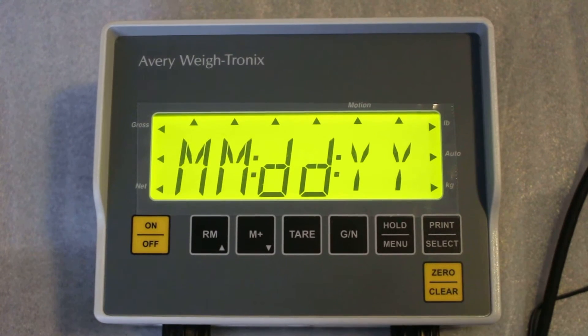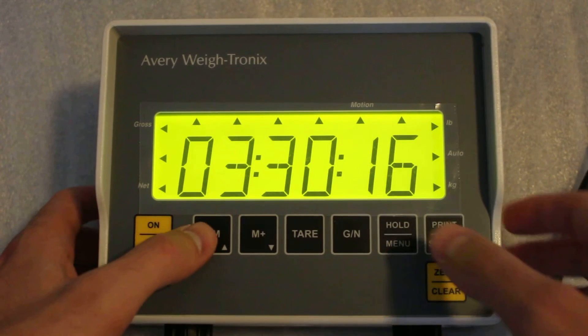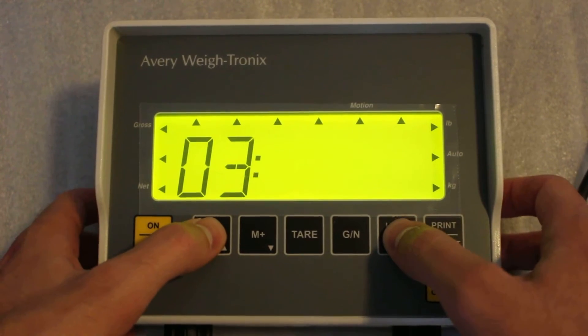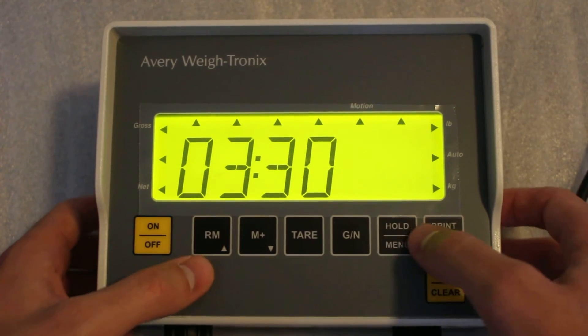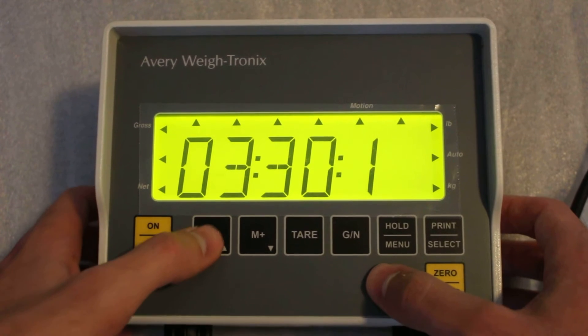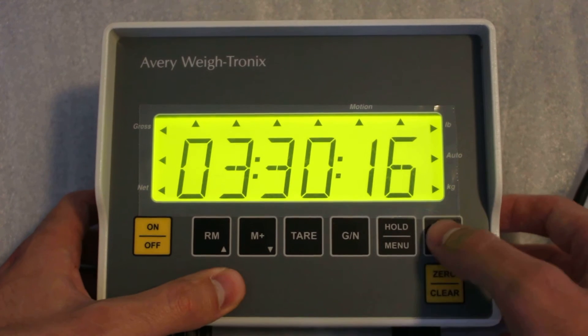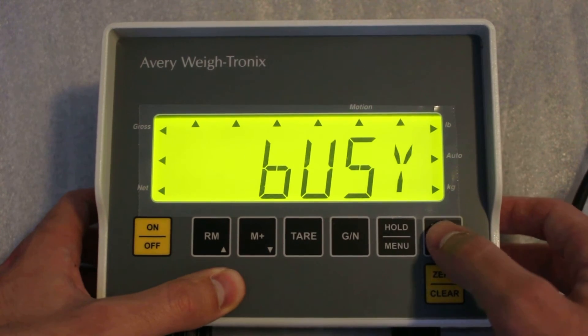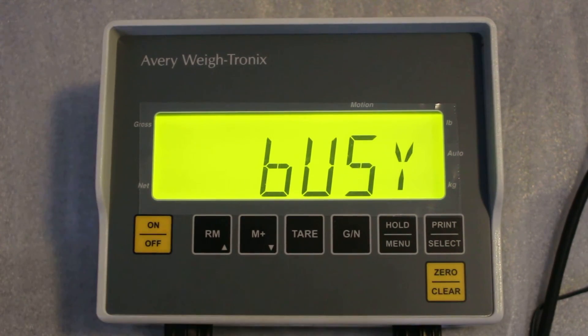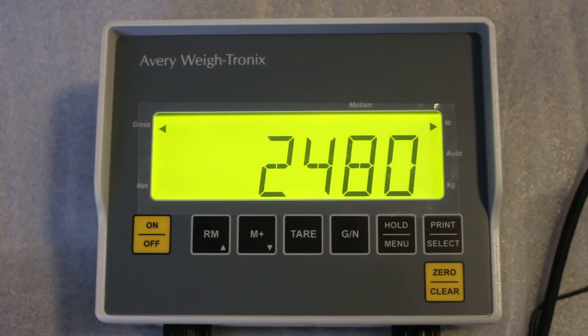Push print select, got the month and day here, so we'll go ahead and change that accordingly. I'm just doing this by using the RM and the hold menu to go through those options and pushing print select. Now push G in, it says busy, and now we have the time and date set up.